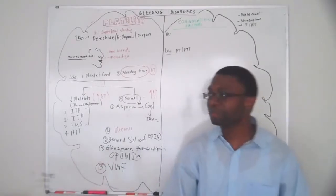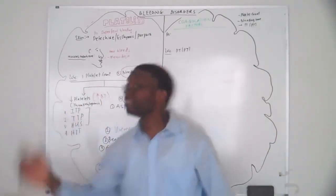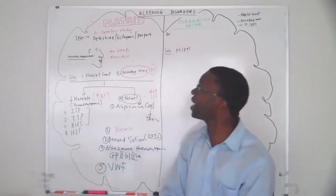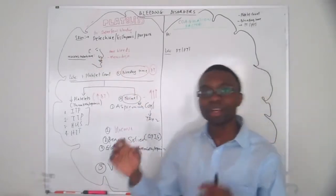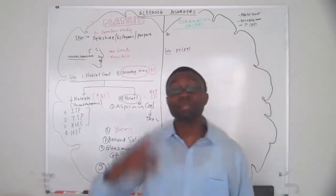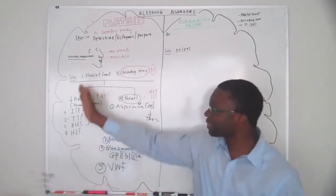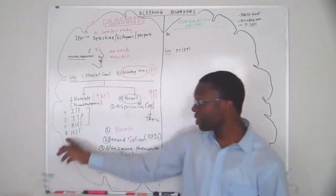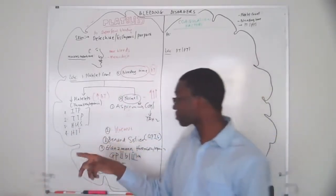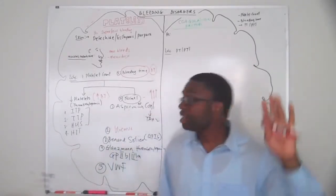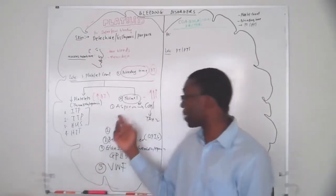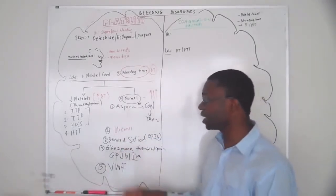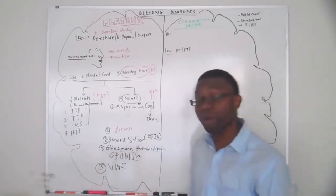Brief summary so far — we're still on the platelet side of the brain. Superficial bleeding: think platelets — petechiae, ecchymosis, palpable purpura, nosebleeds, menorrhagia. Order a CBC stat. If platelet count is low: ITP, TTP, HUS, HIT. If on heparin, we have a problem. If platelet count is normal: are they on aspirin? Do they have uremia from missed dialysis? Do they have Bernard-Soulier, Glanzmann thrombasthenia, or von Willebrand factor deficiency?